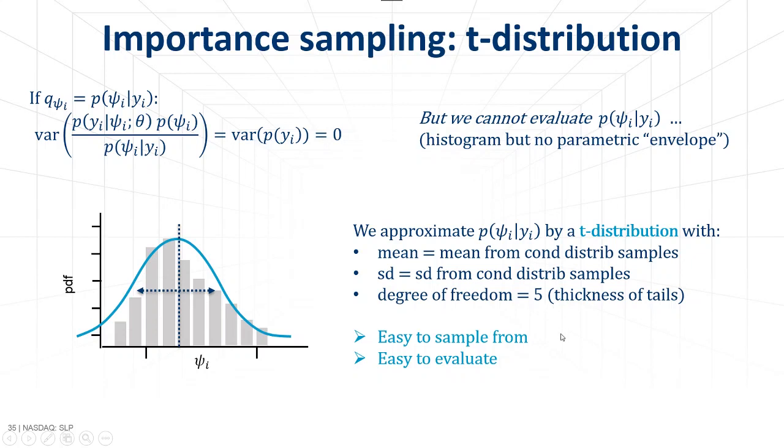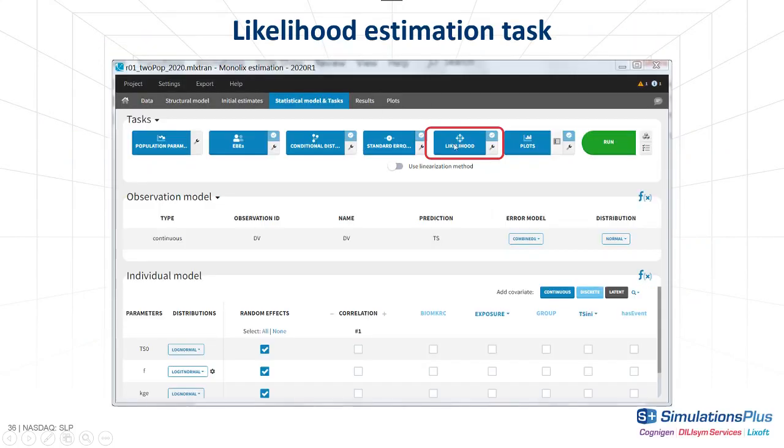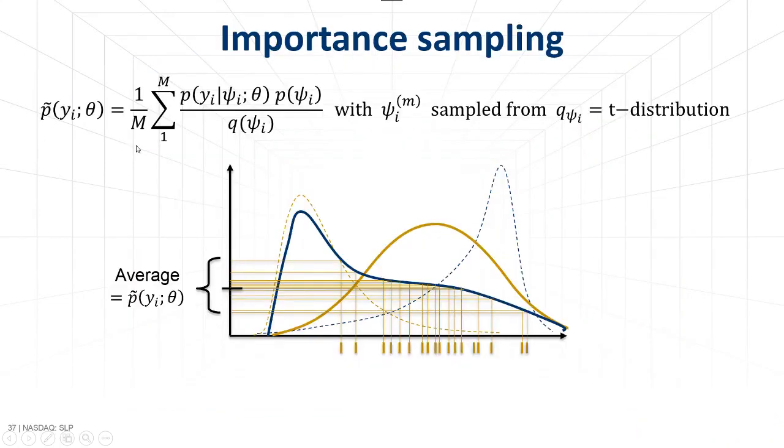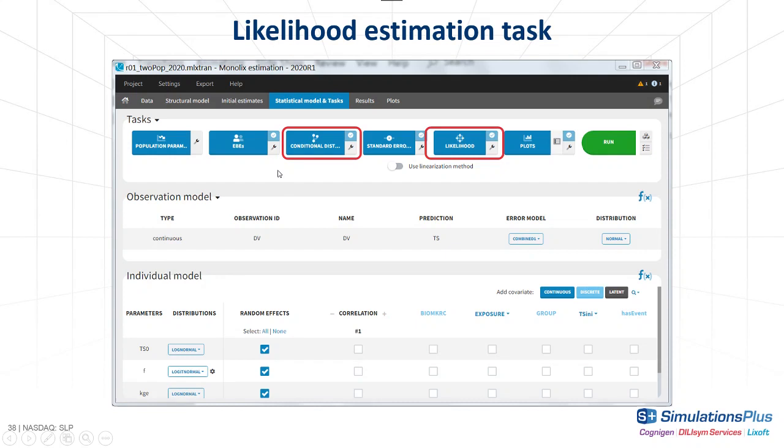So this way, we have a proposal distribution that is easy to sample from and to evaluate, and we should greatly reduce the variance of our estimate of the likelihood. So when you click on the likelihood task, what happens is that we are going to sample many samples from the t-distribution, and evaluate this expression, and do the average. And this gives our likelihood estimate. Remember that the t-distribution depends on the mean and standard deviation of the samples obtained during the conditional distribution task. So when you calculate the likelihood via importance sampling, it is important to run the conditional distribution task before, and this is what is done by default in Monolix.